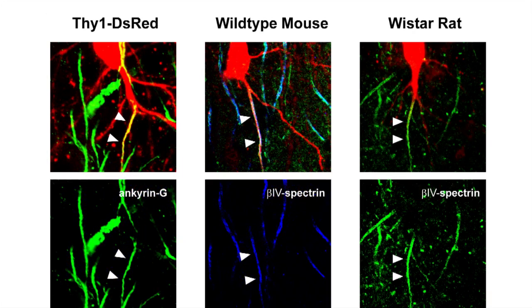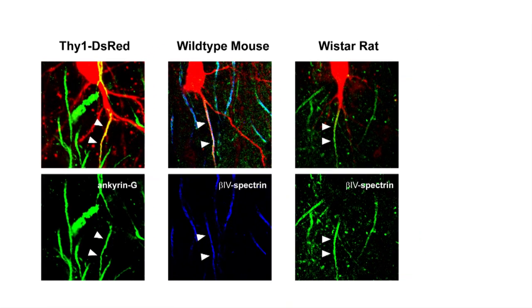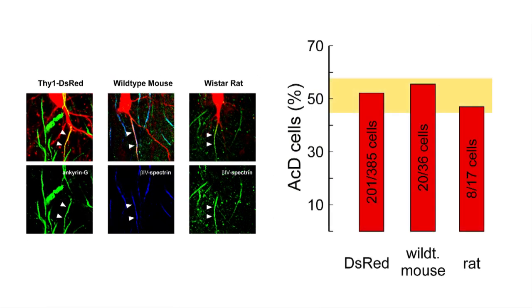We performed such stainings in different strains of mice and also in rats. In all cases, we found a similarly high prevalence of cells with axon-carrying dendrites. We therefore concluded that the dendritic origin of axons is not only very frequent in these animals, but is phylogenetically conserved in the hippocampus, indicating its functional relevance.